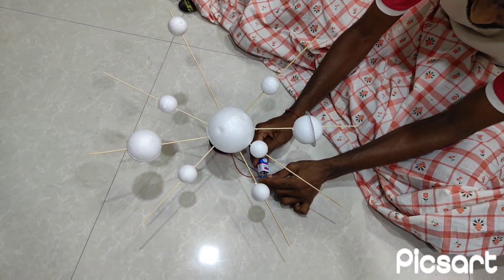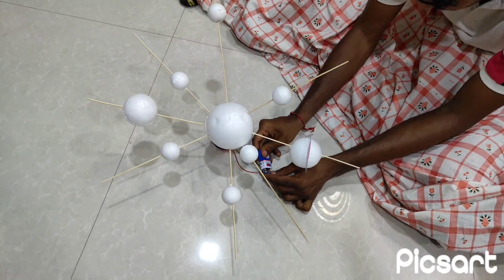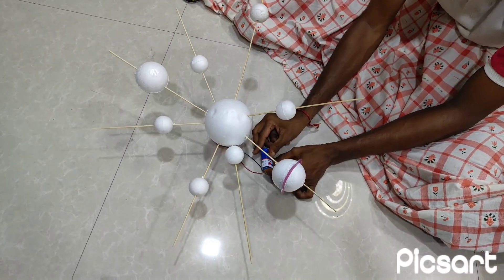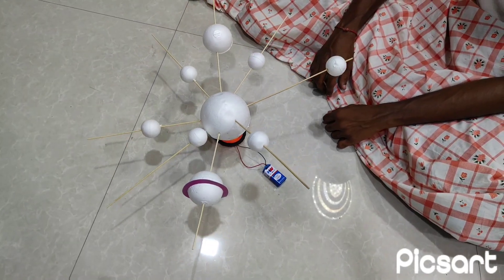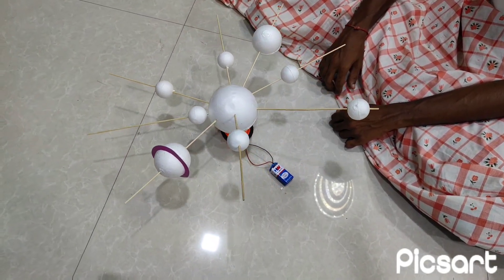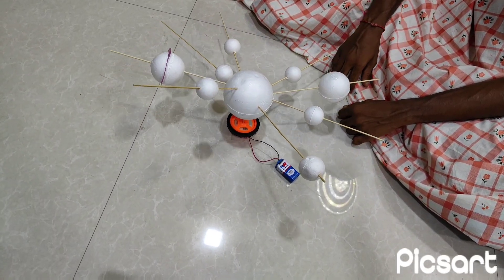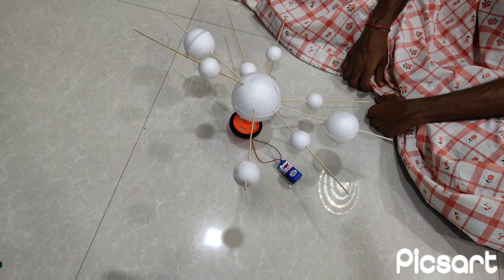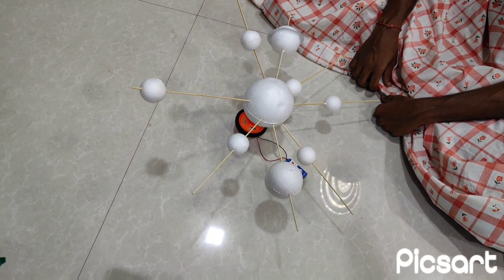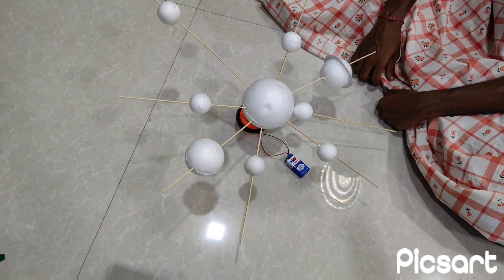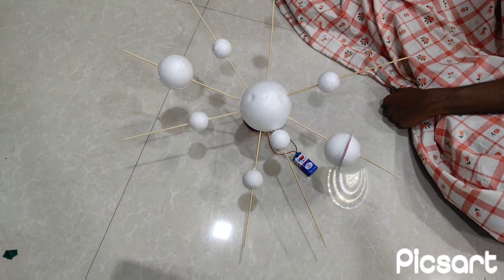So it is time to connect the battery. After connecting the battery, the solar system will rotate. You can see the solar system is rotating. This is how the working solar system works.